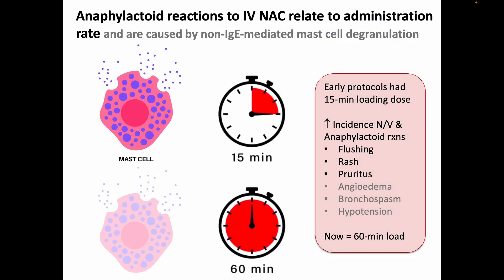Anaphylactoid reactions are due to non-IgE-mediated mast cell degranulation, as opposed to anaphylactic reactions which are immune-mediated. Anaphylactoid reactions can occur with NAC and are related to the rate of administration, occurring more commonly the faster you give the medication. Early IV NAC protocols called for the loading dose to occur over 15 minutes, but this was later changed to a full hour to reduce the incidence of NAC-induced nausea and vomiting, rash, flushing, and itching. More severe reactions can occur, but are quite rare. It's also possible to have anaphylactoid reactions to PO NAC, but the incidence there is quite low.